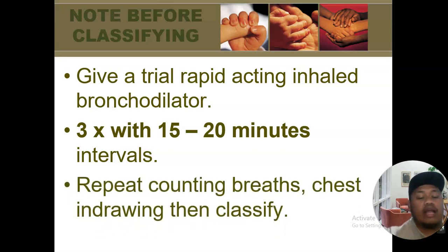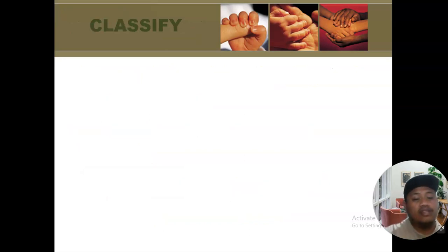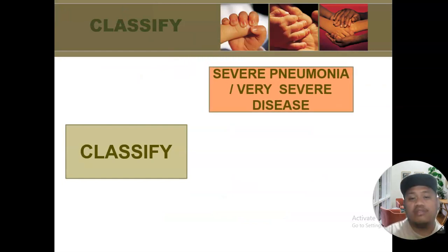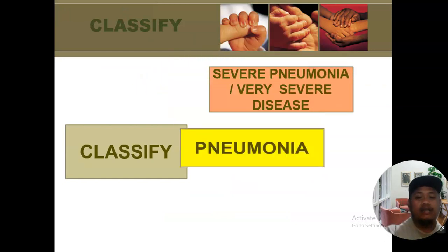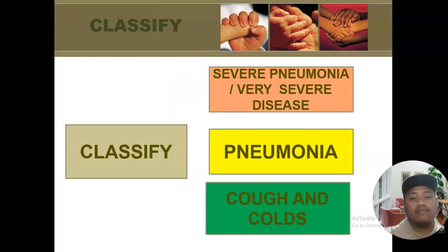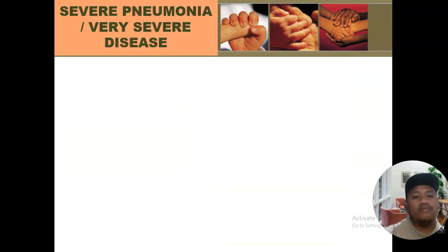After giving the bronchodilator, you have to recount the breaths and recheck for chest indrawing before classifying the condition. We have three classifications: severe pneumonia or very severe disease, followed by pneumonia, and then cough and colds.